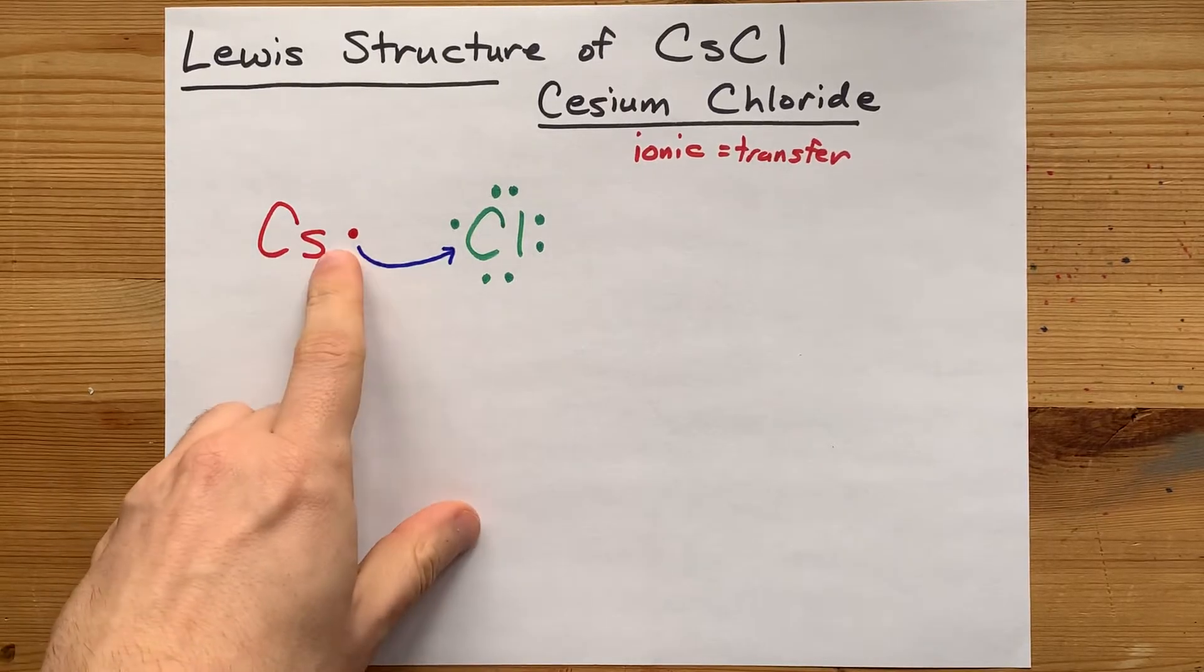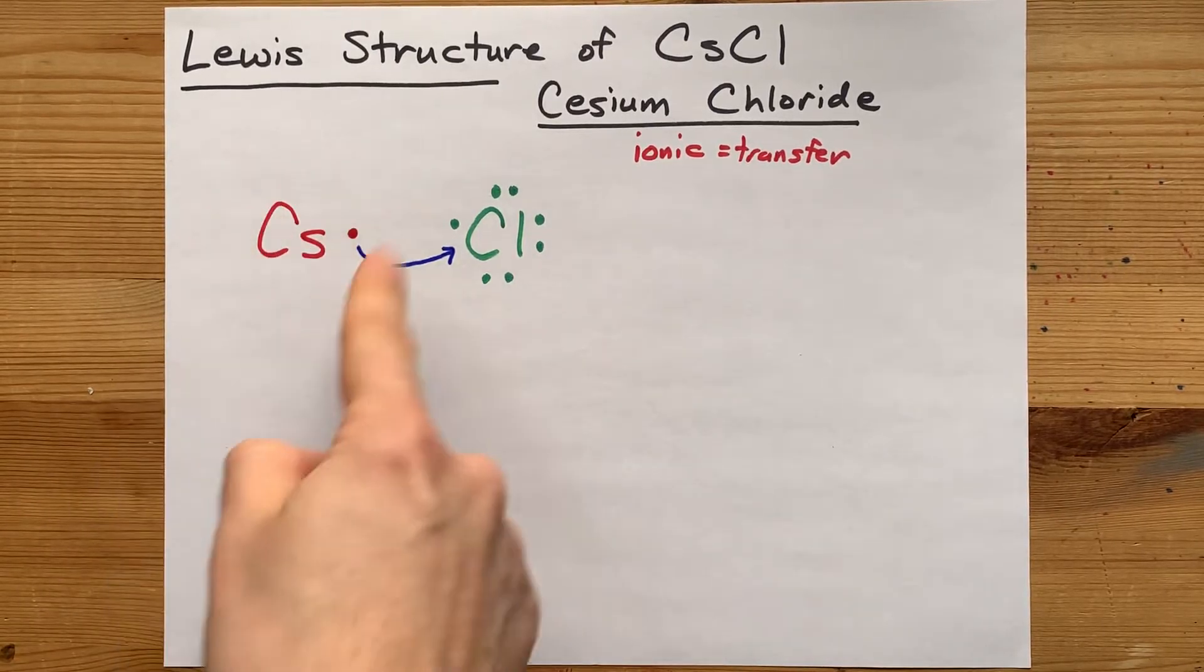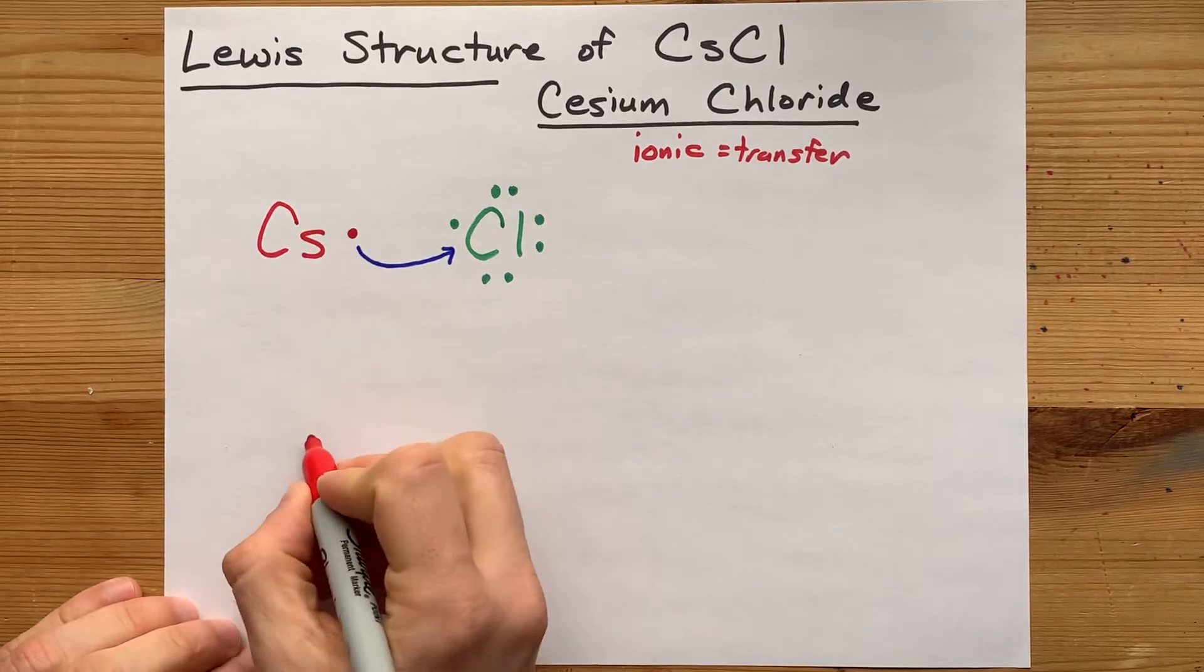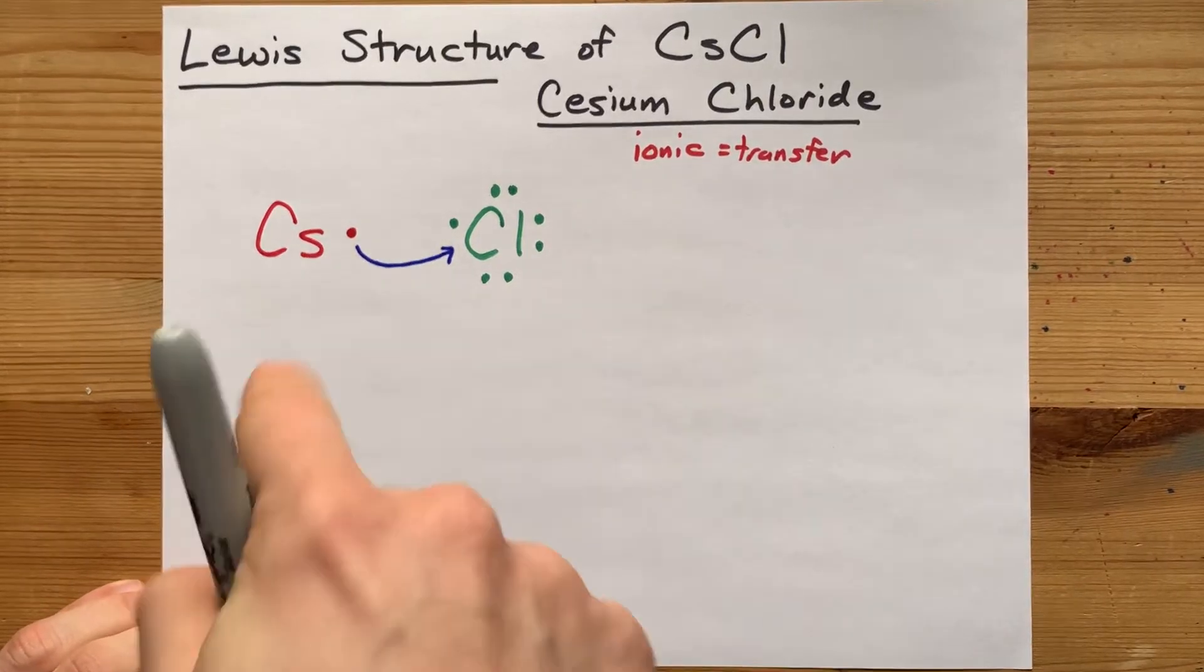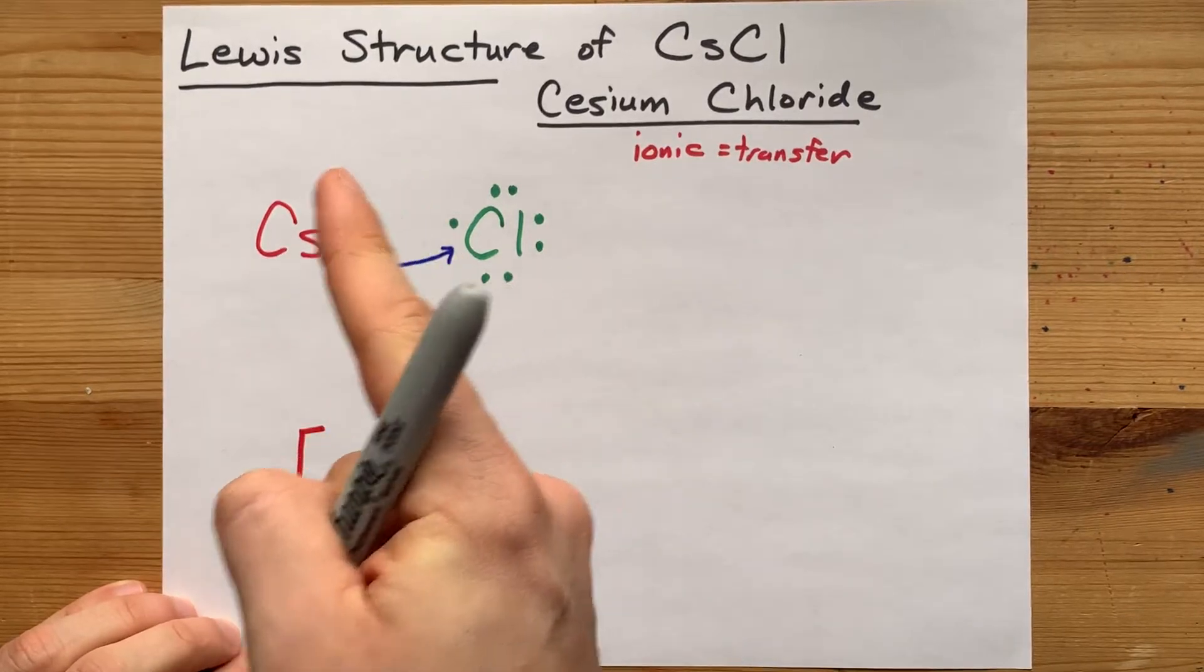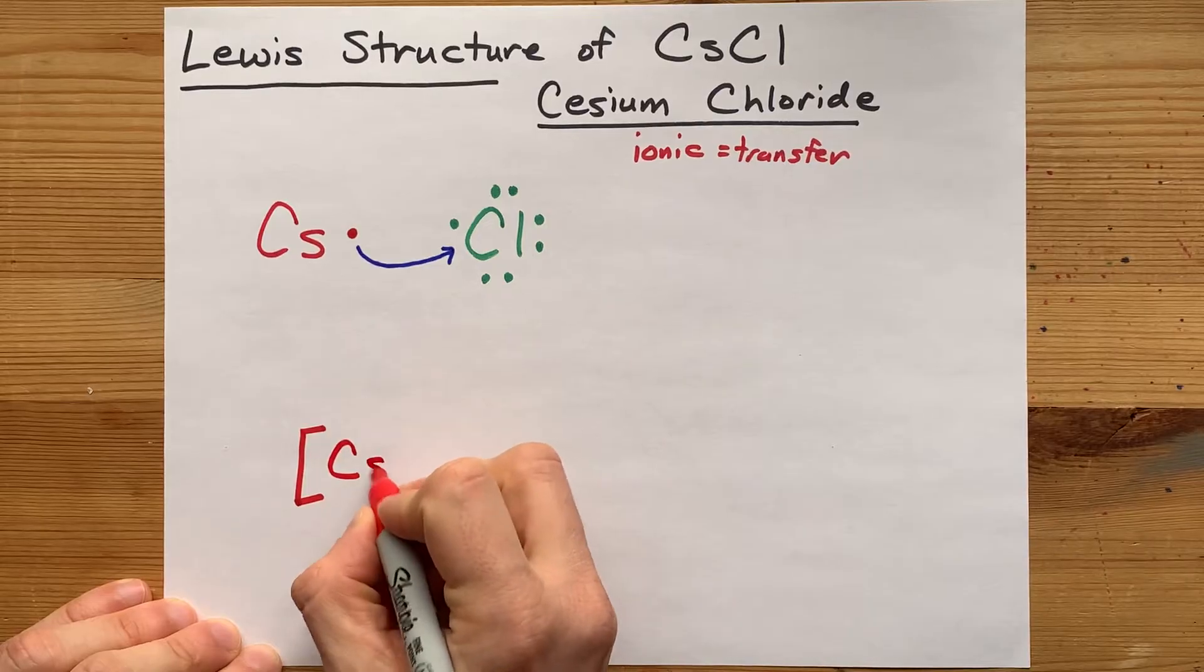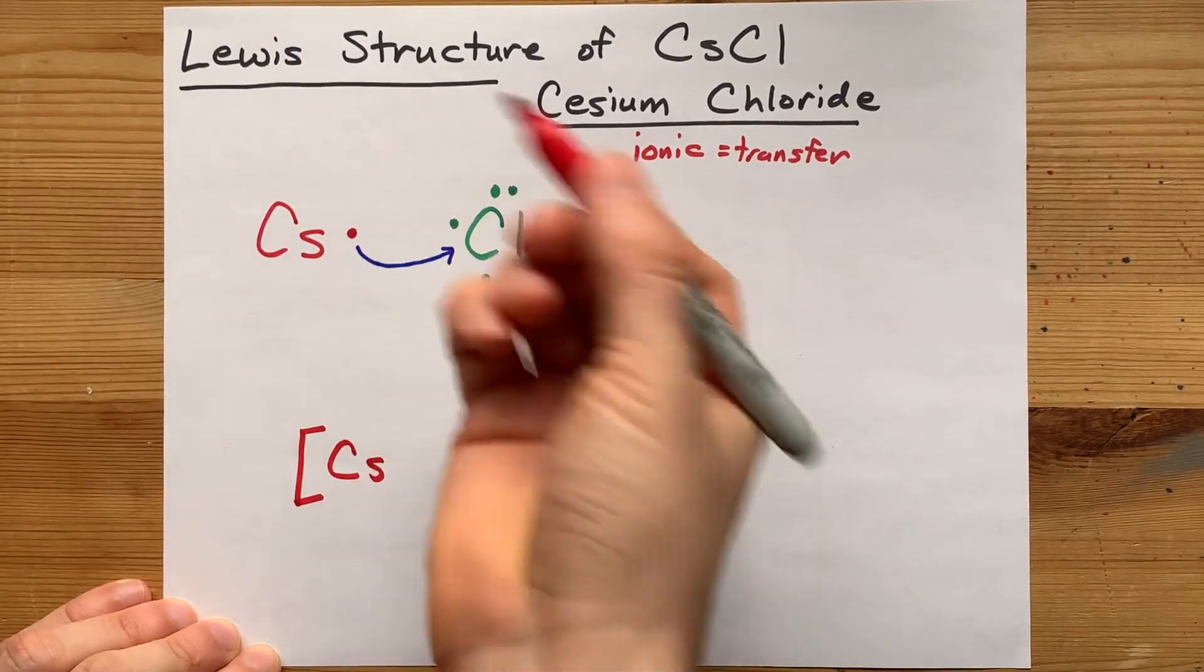And then this cesium has no electrons left in what was its outer shell. That means its actual outer shell is now the one just on the inside of that, which by definition is full. Otherwise, that electron wouldn't have been in this shell.